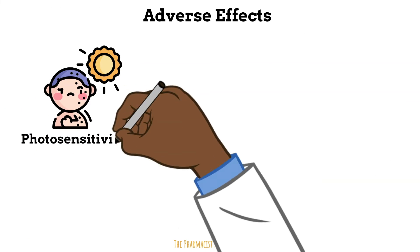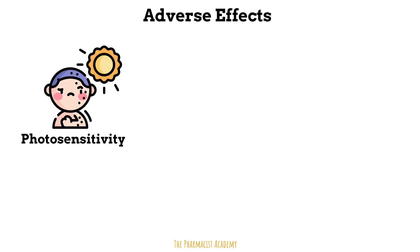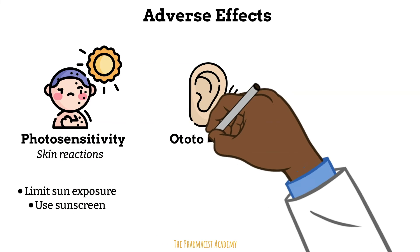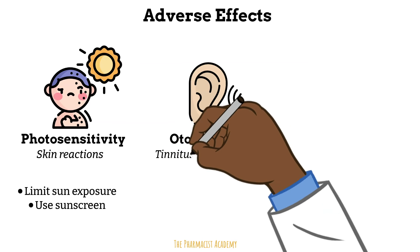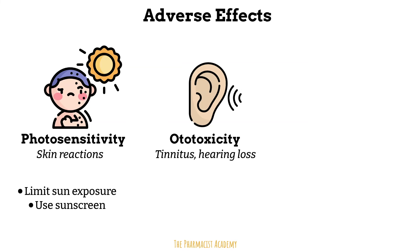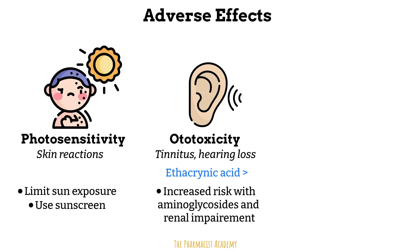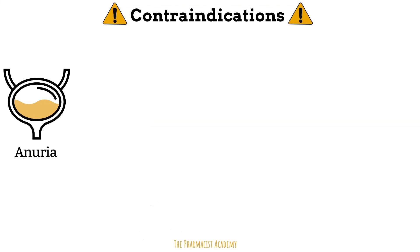Some other notable adverse effects include photosensitivity — loop diuretics may cause the skin to become more sensitive to the sun and lead to skin reactions, so patients should limit sun exposure and use sunscreen. Ototoxicity will manifest as tinnitus and possible hearing loss. This can occur with any of the loop diuretics, but ethacrynic acid has the highest potential. The risk also increases when loop diuretics are used together with aminoglycosides or in patients with renal impairment, and patients receiving higher doses or IV formulations have increased risk. Other side effects include effects due to fluid loss. In terms of contraindications, you want to avoid these agents in patients with anuria — defined as a daily urine output of less than 100 ml — as the risk of ototoxicity increases in anuric patients.